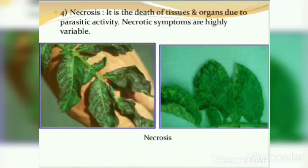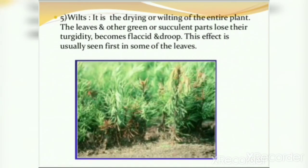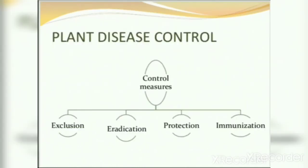Fourth is necrosis — the death of tissue and organs due to parasitic activity. Necrotic symptoms are highly variable; in tomatoes, wilt causes the entire plant to die. The leaves and other green and succulent parts lose their turgidity, become flaccid and droop, seen first in some leaves. Dieback is the dying of plant organs, especially stems and branches, backward from the tip due to plant disease.